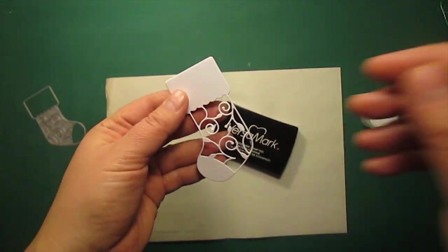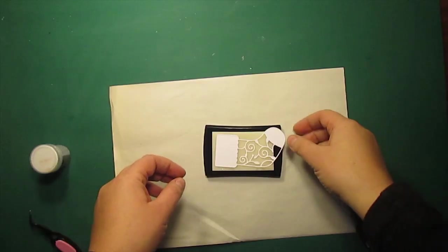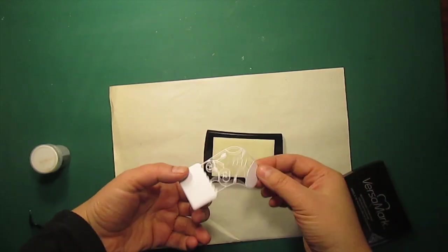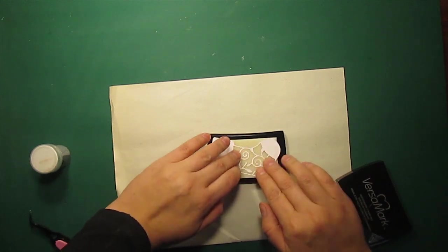The key to easily achieve a sophisticated look is to use intricate dies. You just have to run it through the die-cutting machine. It is leafy stocking die by Memory Box.